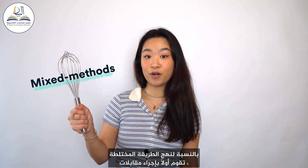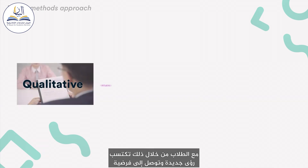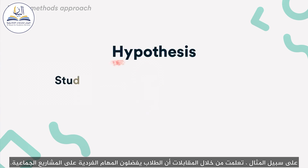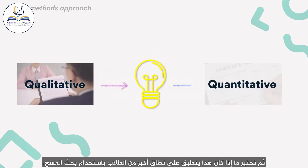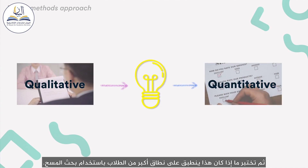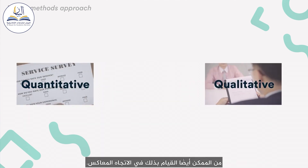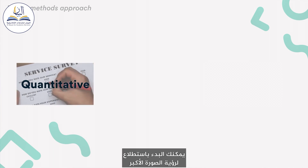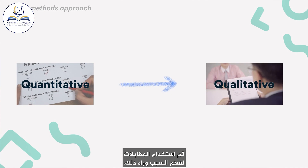For the mixed method approach, you first conduct interviews with the students. Through that, you gain new insights and come up with a hypothesis. For example, you learn through interviews that students prefer individual assignments over group projects. Then, you test whether this applies to a larger scale of students using survey research. It's also possible to do it the other way around — you can start out with a survey to see the bigger picture, then use interviews to understand the reason behind it.